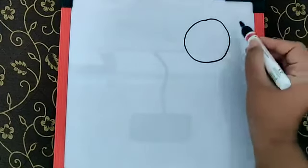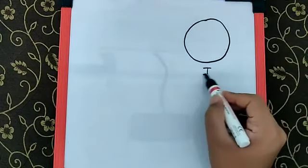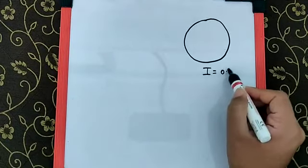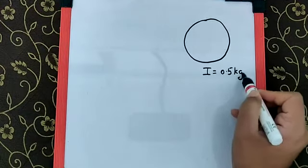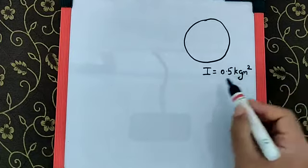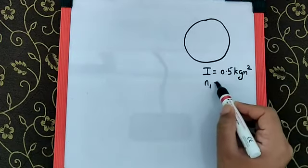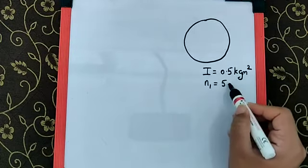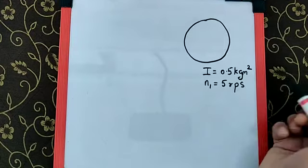Practically we can say, this is the disk for which the moment of inertia is given as 0.5 kg meter square and it is rotating, let's call it as N1, as 5 rps.